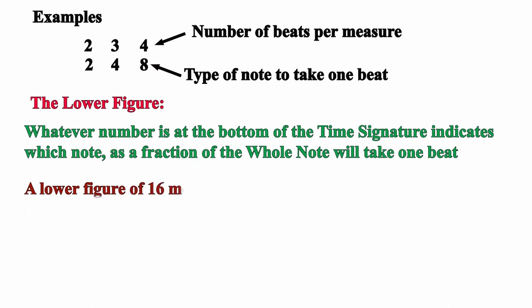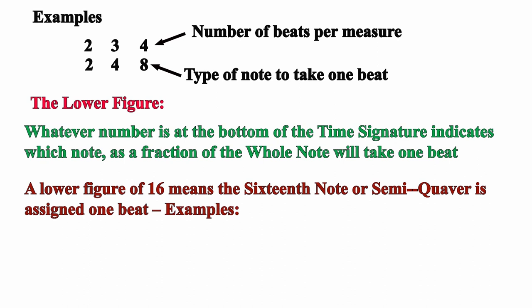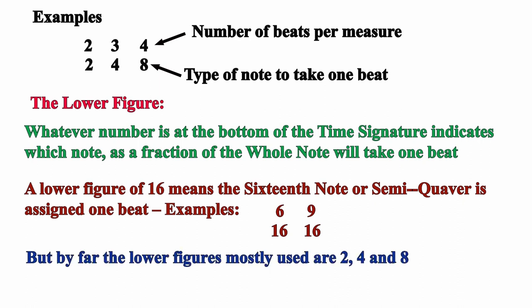A lower figure of 16 means the sixteenth note or semiquaver is assigned one beat — for example, 6 16, 9 16, and so on. We can continue using other notes, but by far the lower figures most used by composers are 2, 4, and 8 because they are the most practical.